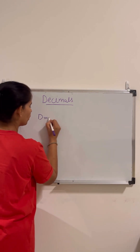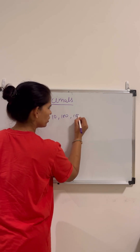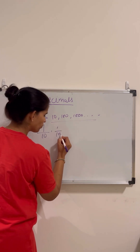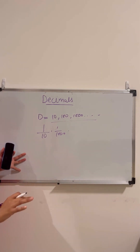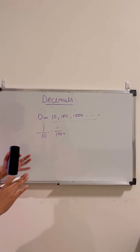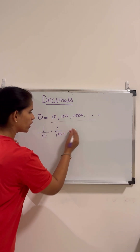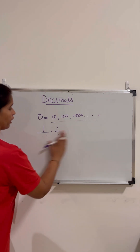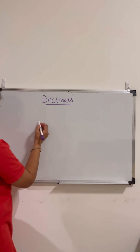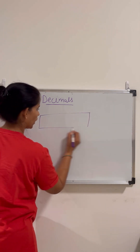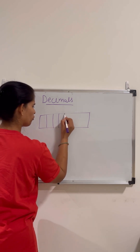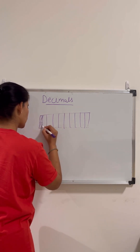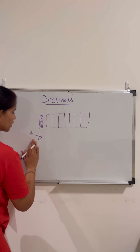If there is a fraction which has a denominator like ten, hundred, or thousand, these kinds of fractions are called decimal fractions. Just keep in mind: if a fraction has a denominator of ten, hundred, thousand, etc., it is called a decimal fraction. For example, one by ten is a decimal fraction.